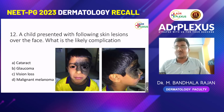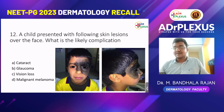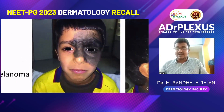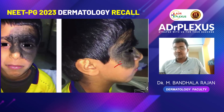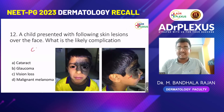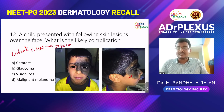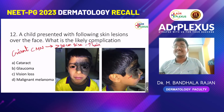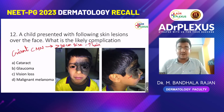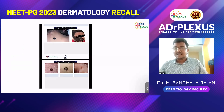Next: a child presented with skin lesions over the face. What is the likely complication? Options: cataract, glaucoma, visual loss, malignant melanoma. The patient has a hyperpigmented lesion over one side of the face with hair growth in that area — this is a giant congenital melanocytic nevus (GN CMN), defined as more than 20 cm in size. Whenever there is a GN CMN, the complication is malignant transformation, which is malignant melanoma. The answer is C, malignant melanoma.